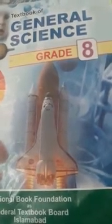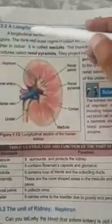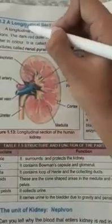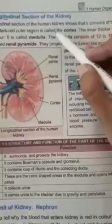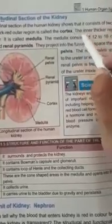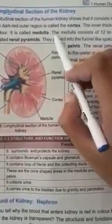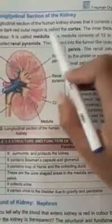The main part of the excretory system is the kidney. We will learn the anatomy of the kidney and its different parts. Open your book to page number 20, topic 1.3.2 — a longitudinal section of the kidney. Longitudinal means a lengthwise section of a kidney.